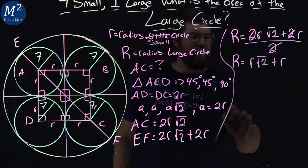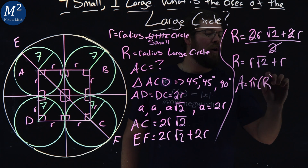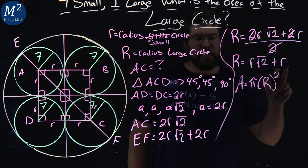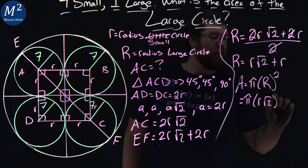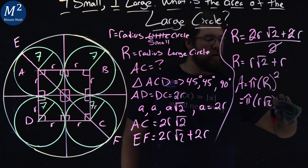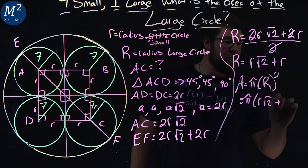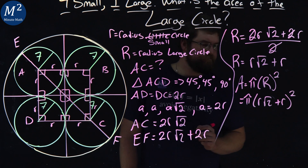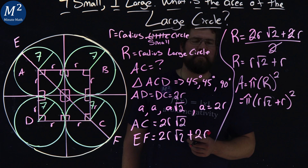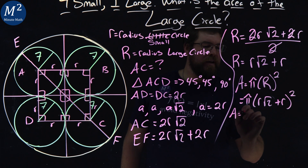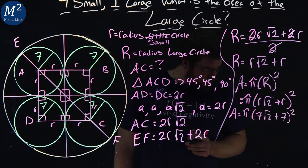The area of a circle is π times big R squared. So the area equals π times (r√2 + r) squared. Now let's put the 7s in: area equals π times (7√2 + 7) all squared.